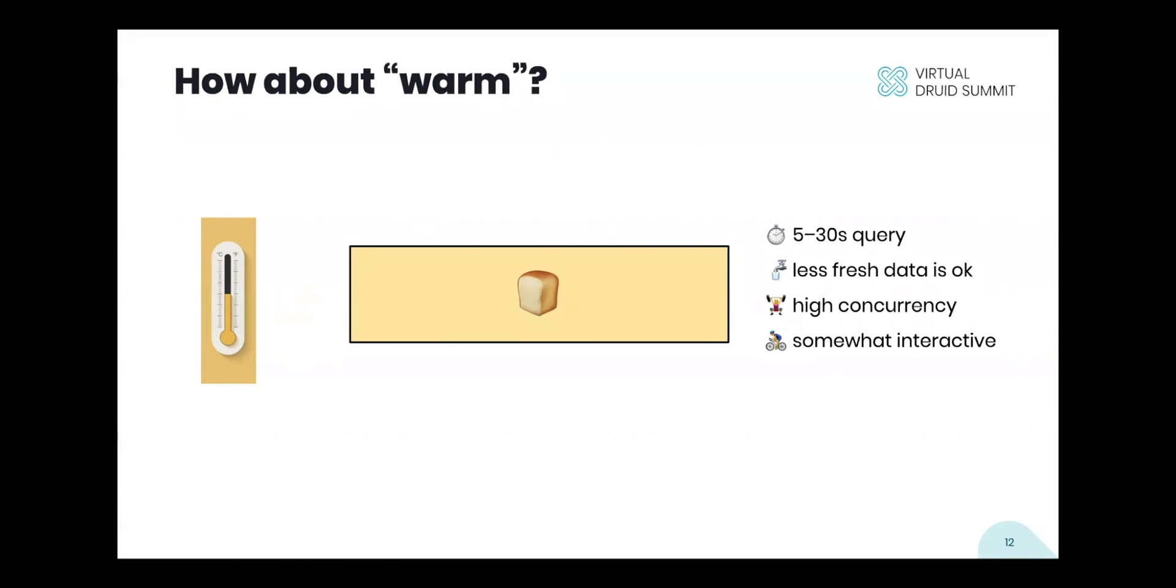So five to 30 seconds. Less fresh data is okay, still here. So we're not looking at real time, up to the minute data. We are okay having data that's a few hours old or a day old. But we do have high concurrency. So unlike cold data, we are going to have a lot of people trying to do stuff here. And it's going to be somewhat interactive. So that's what's driving the need to have these somewhat faster, warmer query times.